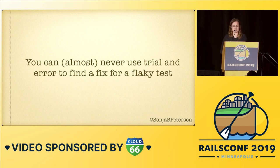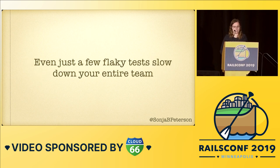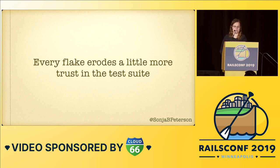We eventually figured out a fix for that flaky test, but not until several different people had tried random fixes that failed, and it sucked up entire days of work. Even just a few flaky tests can really slow down your team. When a test fails without actually signaling something wrong, you not only have to rerun all your tests before you're ready to deploy, you also lose trust in your test suite. Eventually you might start ignoring real failures because you assume they're just flaky tests. So it's super important to learn how to fix flaky tests efficiently, and better yet, avoid writing them in the first place.